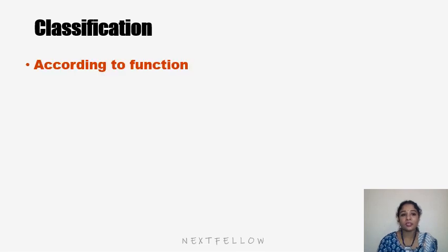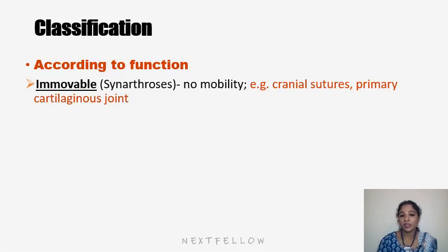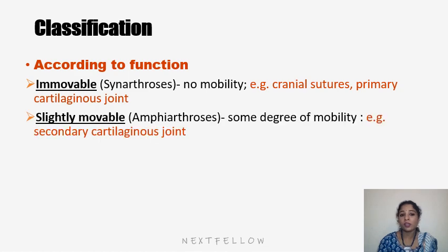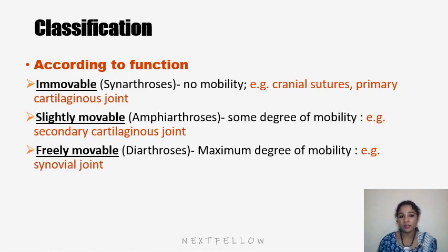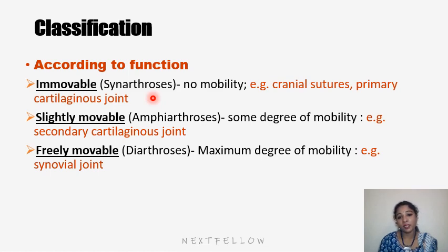According to function, joints are classified as immovable, slightly movable, and freely movable. Immovable joints are otherwise called synarthrosis — there is no mobility at all; examples include cranial sutures and primary cartilaginous joints. Slightly movable joints are amphiarthrosis — 'amphi' means partial — so they are partially movable with some degree of mobility.